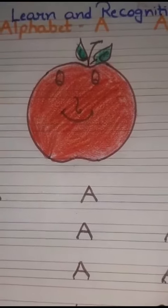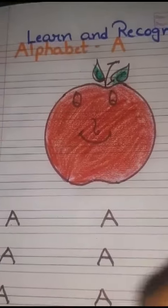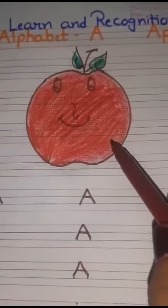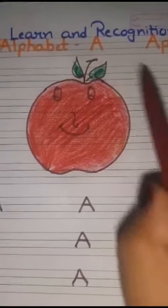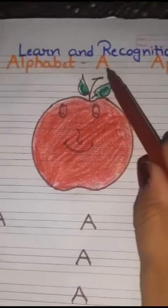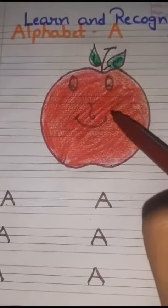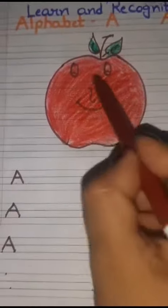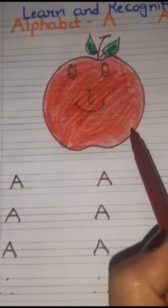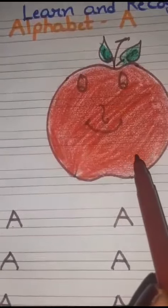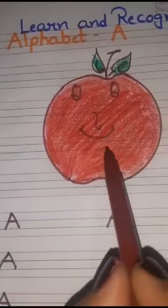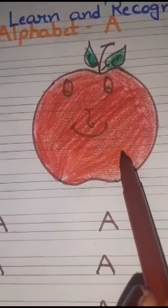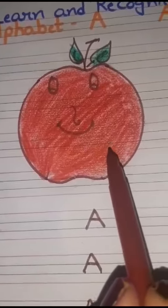Now students, today we learn Enrico Ganesian alphabet A. A for Apple. Which fruit? Apple. And which color? Red. What is the color of an apple? Red.